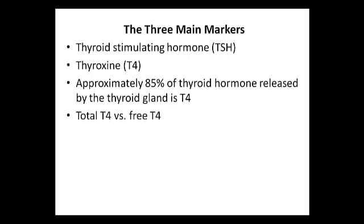When looking at total T4, you need to keep in mind that most of the T4 is protein bound. In other words, most of the T4 produced by the thyroid gland binds to a protein, which is then transported around the bloodstream. Free T4 represents the free form of thyroxin in the blood, and is what I'll be focusing on when discussing the reference ranges and looking at the reports.